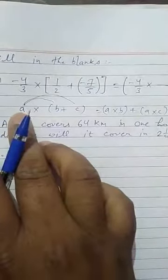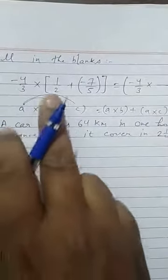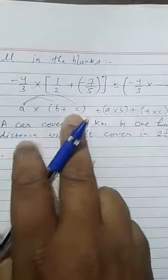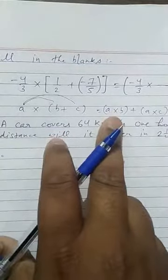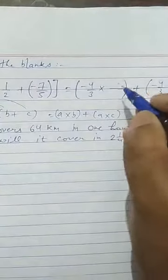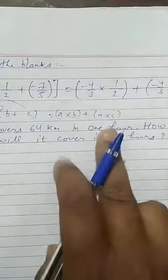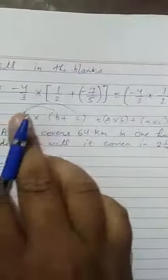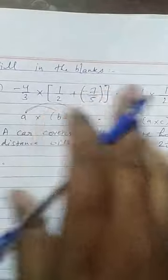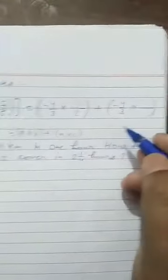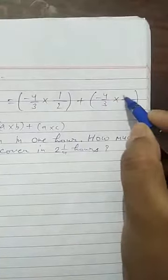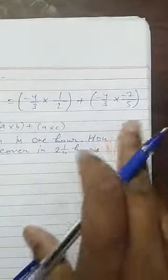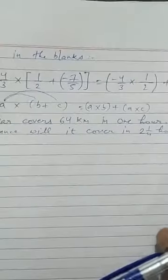The value of A is minus 4 upon 3. Value of B is 1 upon 2. Value of C is minus 7 upon 5. So A into B means this into this. So in the first bracket, we will write here 1 upon 2. Second bracket says A into C. So A into C means minus 4 upon 3 multiplied by minus 7 upon 5. This is the solution. This is called distributive property.